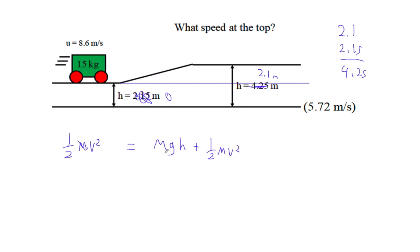And the mass does cancel out of these, right? So I've got 1 half 8.6 squared is 9.81 times only the 2.1 that is higher than the previous elevation, right?